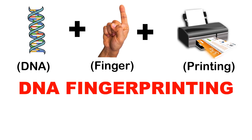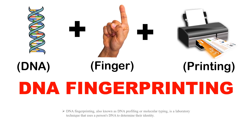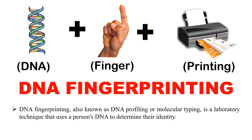The answer is DNA fingerprinting. Three emojis are there — the first represents DNA, the second represents the finger, and the third represents printing. DNA fingerprinting is a technique in which a person's DNA is used to determine their identity. It is also known as DNA profiling or molecular typing.